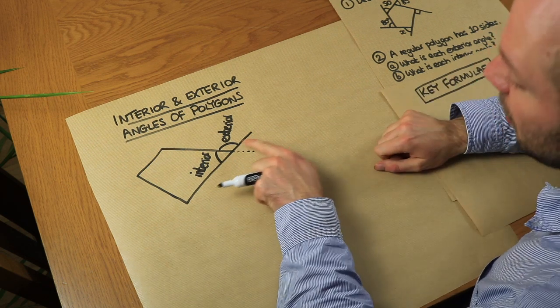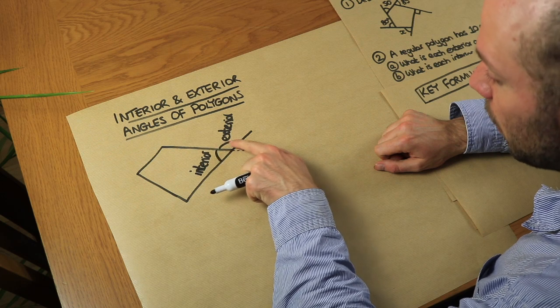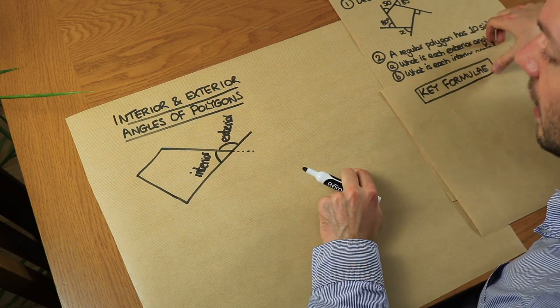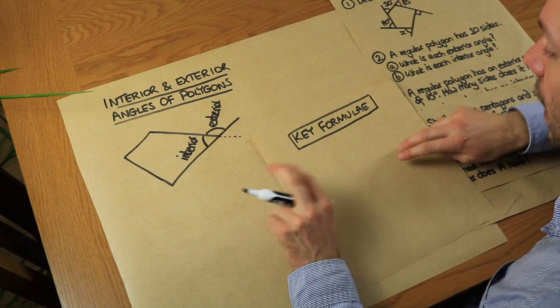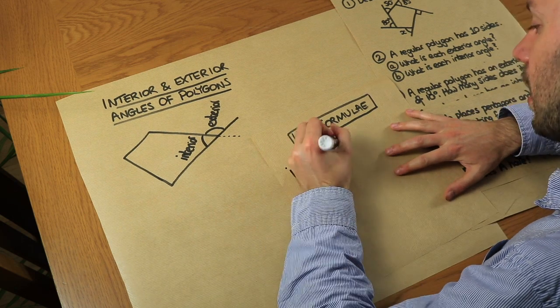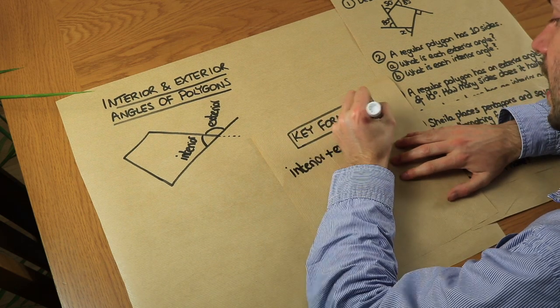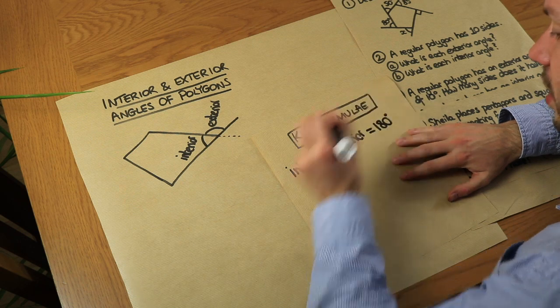Because these two angles are on a straight line, we can see that they add up to 180°. That gives us our first key formula: the interior angle plus the exterior angle around any point equals 180 degrees.